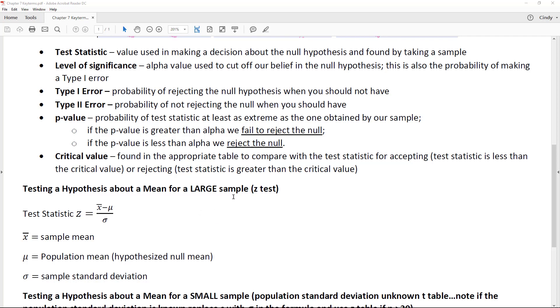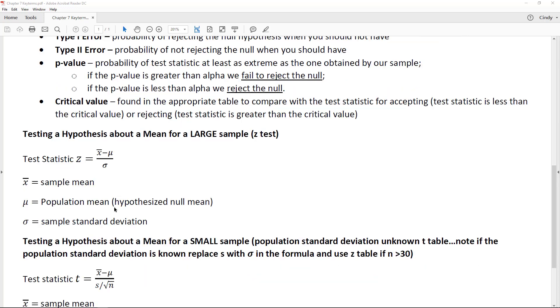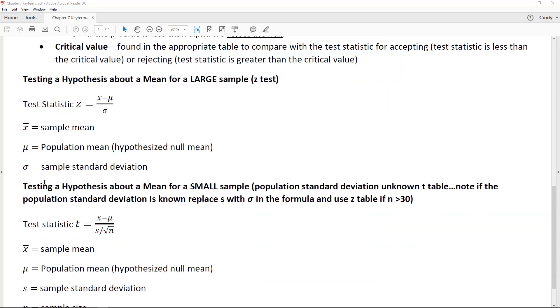You put all this stuff in your calculator, you get a z-value, you go look on the z-table. The z-table is going to give you that probability. If you have a small sample or you do not know the population standard deviation,